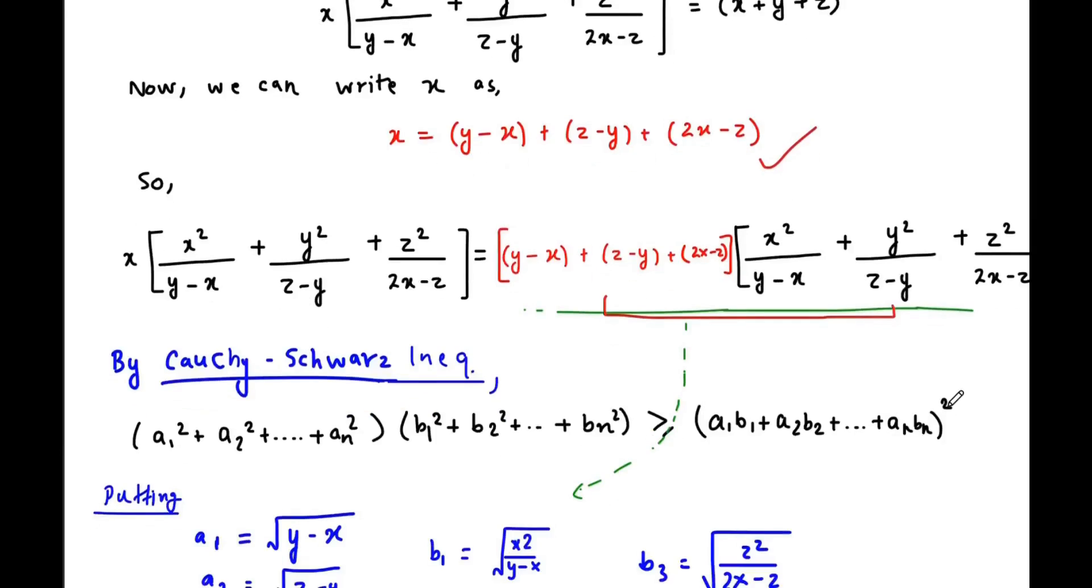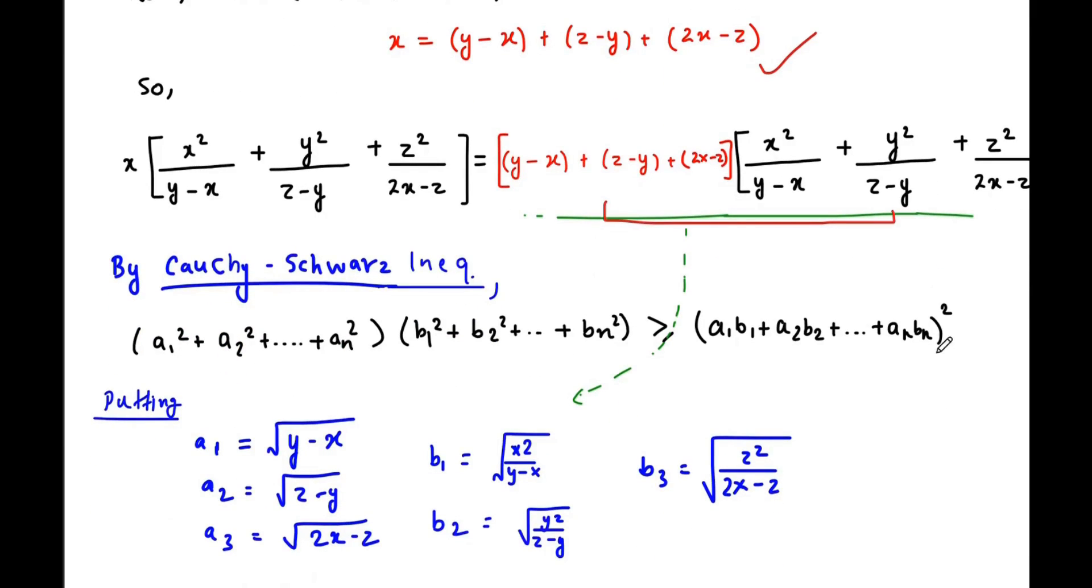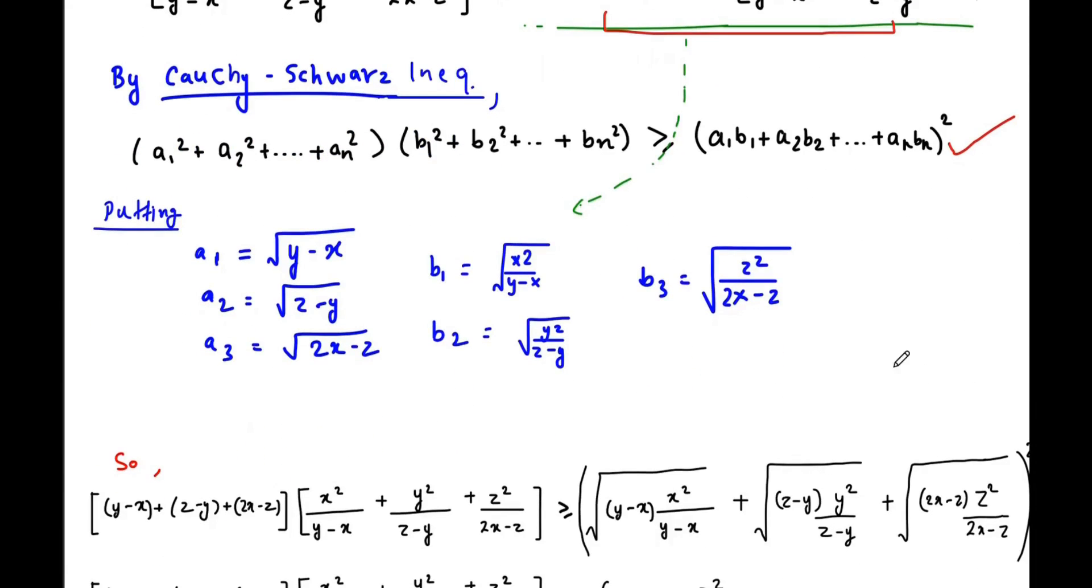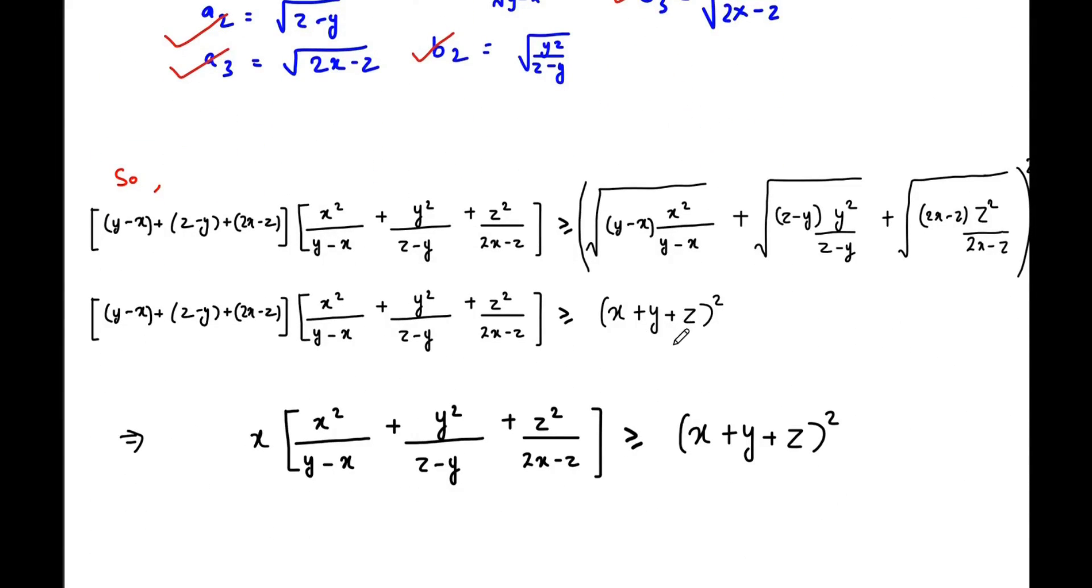Now we use the Cauchy-Schwarz inequality. You can refer to the inequality which is given here. Putting a1 as root over y minus x, a2 as root over z minus y, a3 as root over 2x minus z, and b1 as root over x squared upon y minus x, b2 as root over y squared upon z minus y, and b3 as root over z squared upon 2x minus z, we get that x times x squared upon y minus x plus y squared upon z minus y plus z squared upon 2x minus z is greater than or equal to x plus y plus z whole squared.